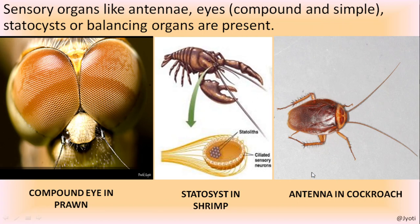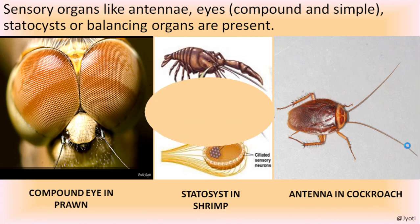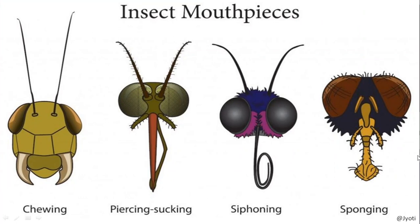The antenna of cockroach is a jointed structure with very small segments. This antenna is also a sensory organ and helps the organism to know the direction in which it is moving. Besides the antenna, they also have anal cerci, which is also a sensory organ.